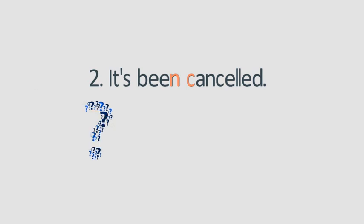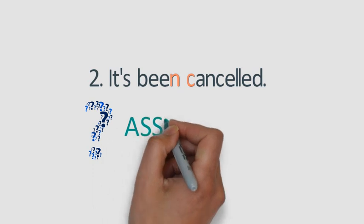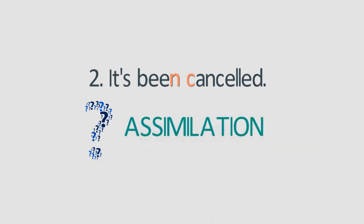Yes, it's assimilation — regressive assimilation, to be precise. The sound in 'cancelled,' which is pronounced at the back of our mouths, influences the way the final N in 'been' is pronounced, and this becomes an NG sound — a sound also pronounced at the back. 'It's been cancelled.'